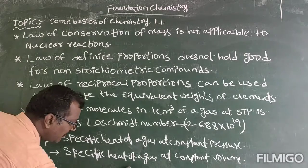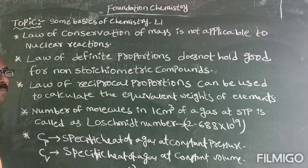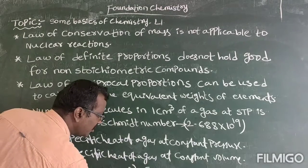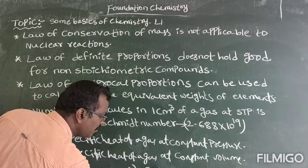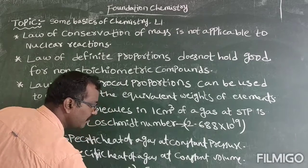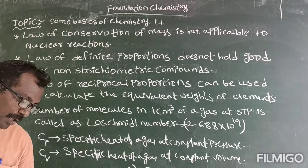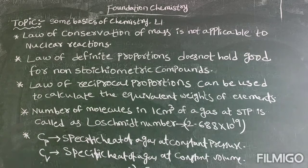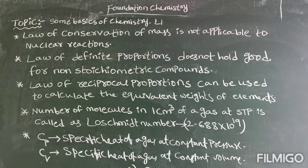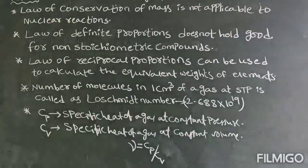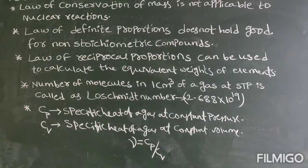The ratio of CP to CV is denoted by gamma: γ = CP/CV. This gamma is used to give information about atomicity.